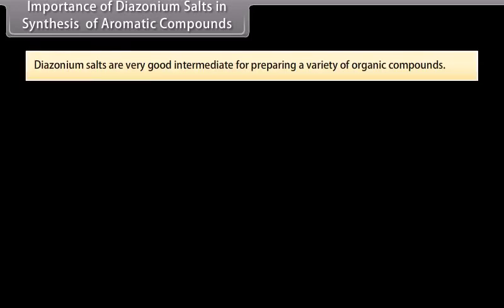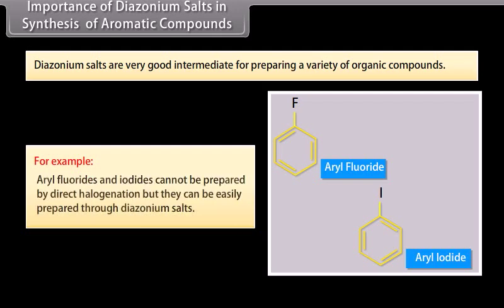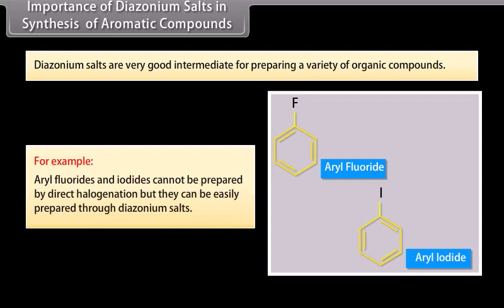Importance of diazonium salts in synthesis of aromatic compounds: Diazonium salts are very good intermediates for preparing a variety of organic compounds. For example, aryl fluorides and iodides cannot be prepared by direct halogenation but can be easily prepared through diazonium salts.